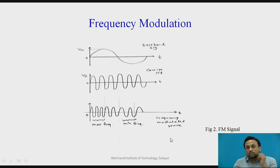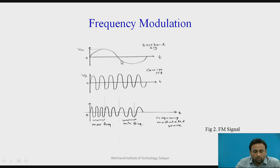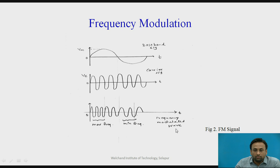Next is frequency modulation. Here we have the modulating signal and the carrier. We change the frequency of the carrier signal — keeping amplitude and phase constant — with respect to the modulating signal. For the positive half cycle you get maximum frequency, and for the negative half cycle you get minimum frequency. This is the frequency modulated wave.